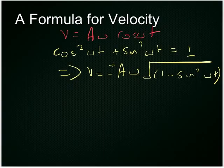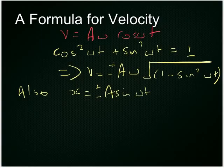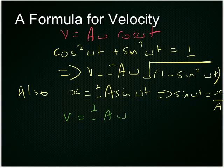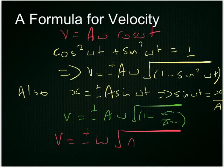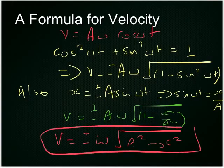Now also we know this, that the displacement is equal to plus or minus A sine omega T. And if you rearrange that, you can get sine omega T equals X over A. So, X squared over A squared is equal to sine squared omega T. So, V equals plus or minus A omega square root 1 minus X squared over A squared, expand that out by multiplying both things in the brackets by A squared, and it leaves you with a final formula. V equals plus or minus omega square root A squared minus X squared. There's your formula. That will tell you the velocity knowing a displacement X.